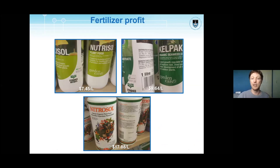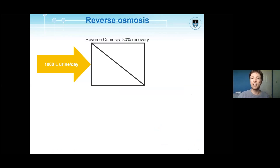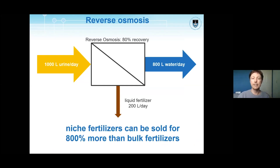Here you can see a full range of prices — at least in South Africa compared to US dollars — that you can typically sell this for. The idea is to use reverse osmosis to concentrate the urine, producing water along with a liquid fertilizer concentrate that can be sold as a niche fertilizer for up to 800% more than bulk fertilizers. The beauty of this process is that it essentially has no waste stream, because it produces water and a liquid fertilizer.